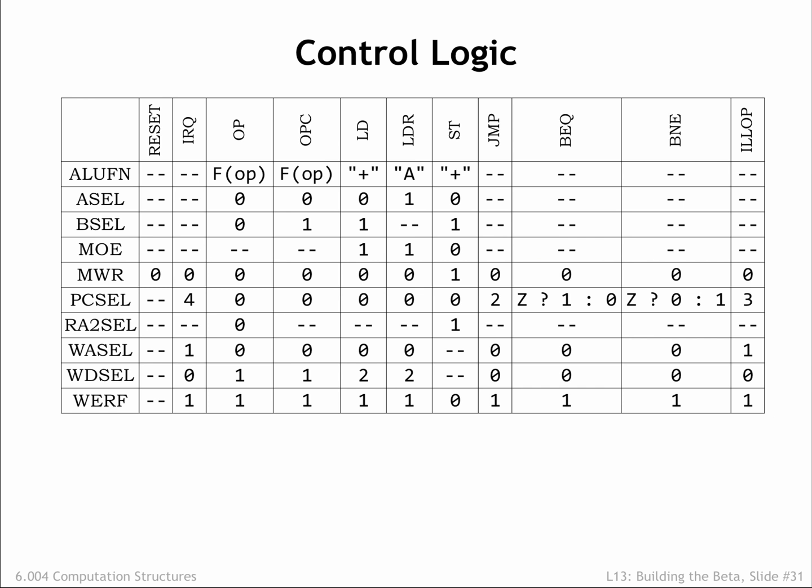Here we've gathered up all the control signal settings for each class of instructions, including the settings needed for exceptions and during reset. Wherever possible, we specify don't care for control signals whose value does not affect the actions of the datapath needed for a particular instruction.